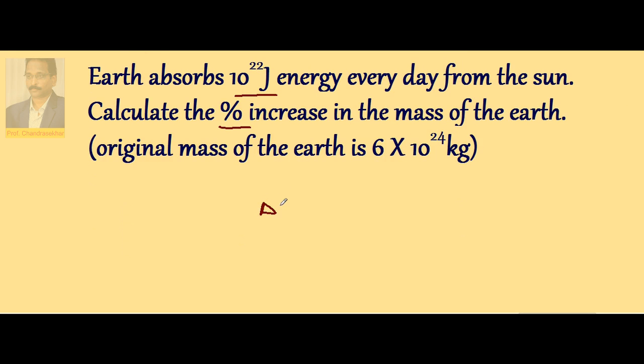We know that delta E is equal to delta M into C squared, i.e., E equals MC squared. Energy can be converted into mass and mass can be converted into energy.